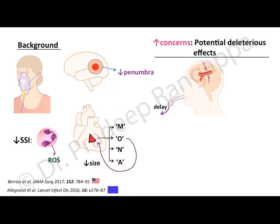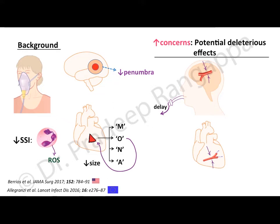Oxygenation induces fibrosis, can worsen acute lung injury or may induce acute lung injury, and there may be atelectasis induced due to oxygen. These are deleterious effects in the face of all the assumed beneficial effects in conditions like stroke, skin and soft tissue infections, myocardial infarction, or acute coronary syndrome.